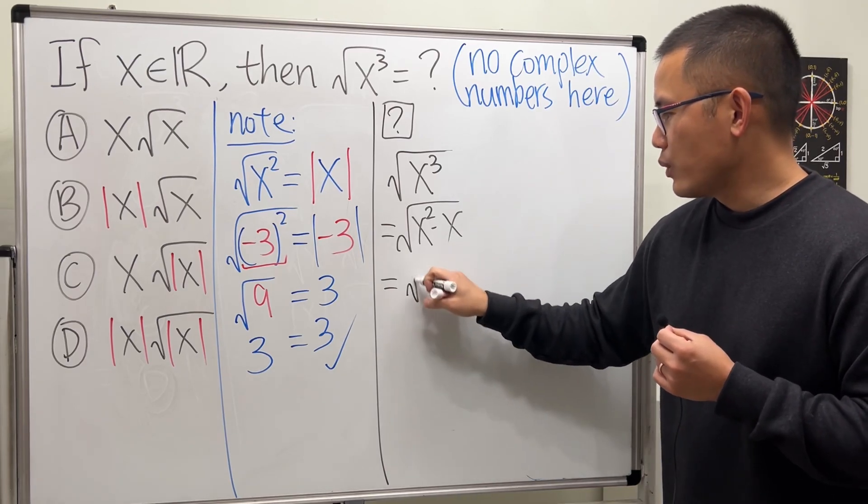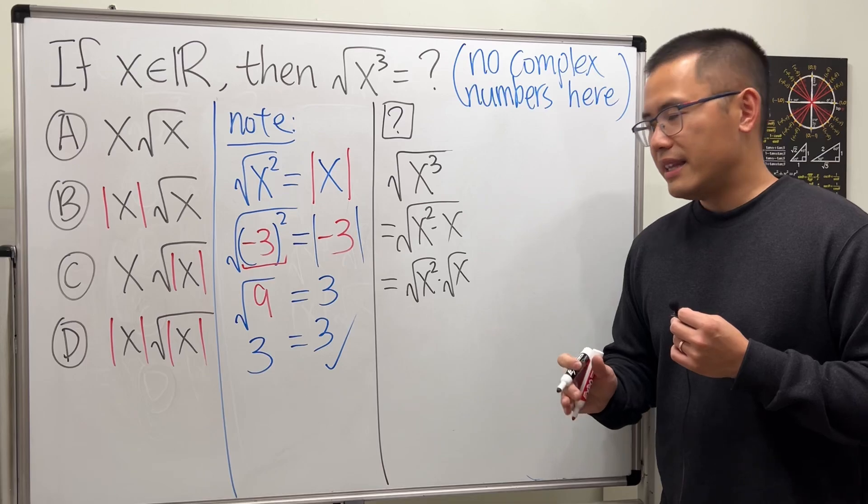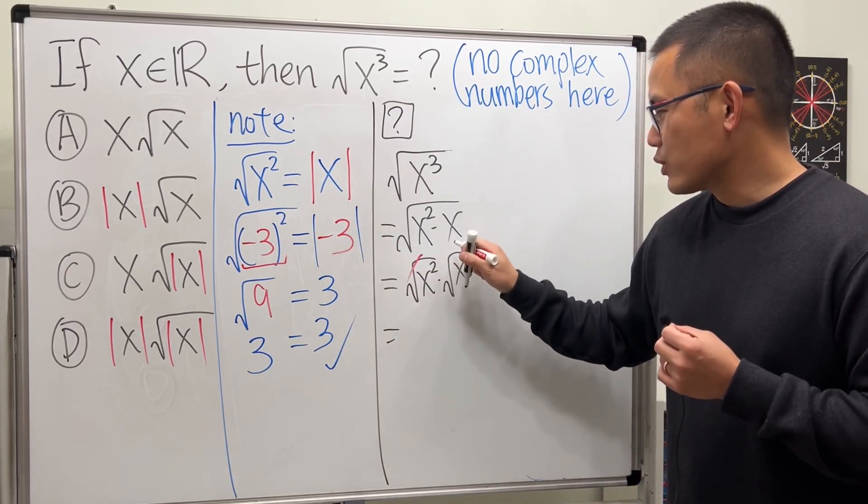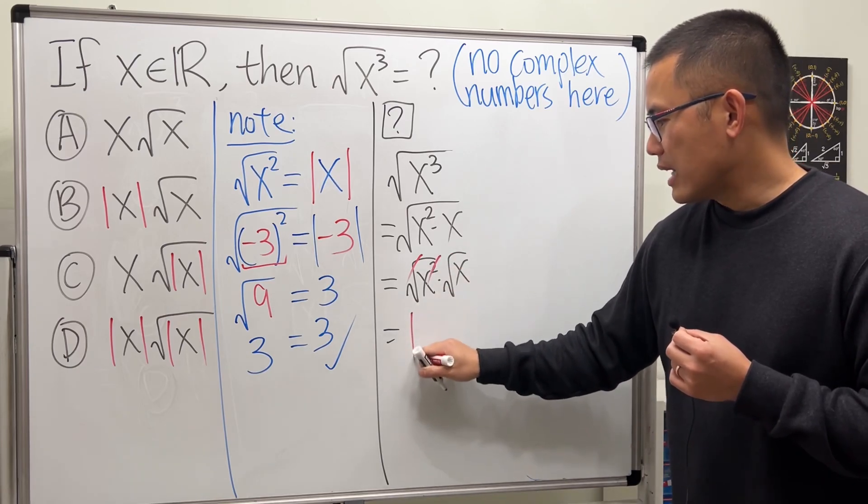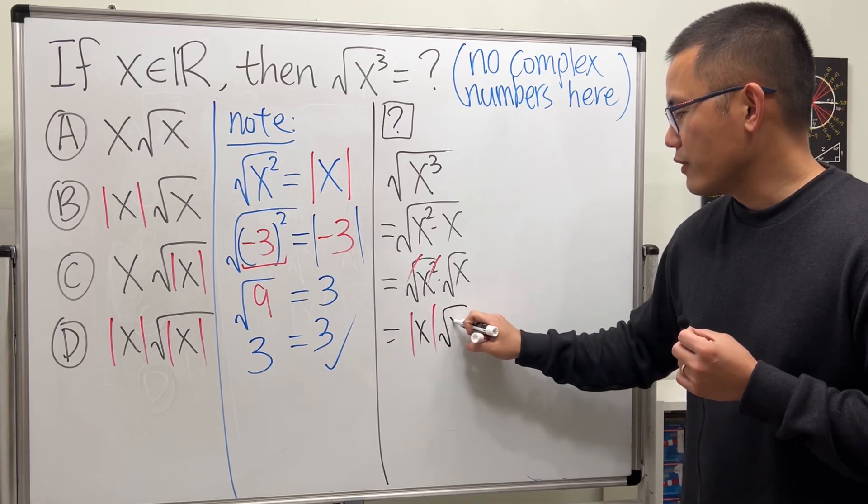And it looks like we can just break them apart as square root of x squared times square root of x. And then it looks like this is just that - cancel the square root and then the square, attach an absolute value, and then the x, and that square root of x.